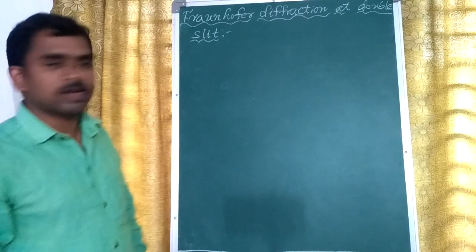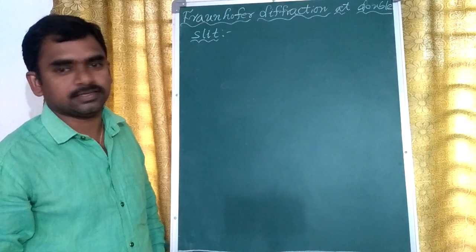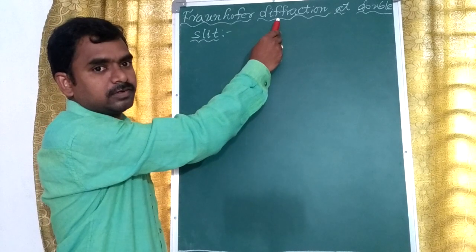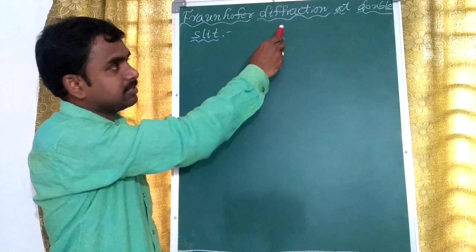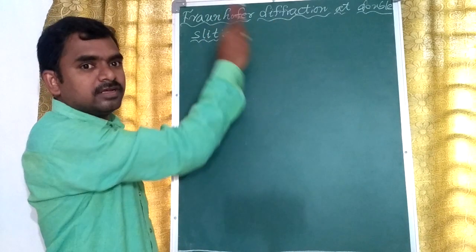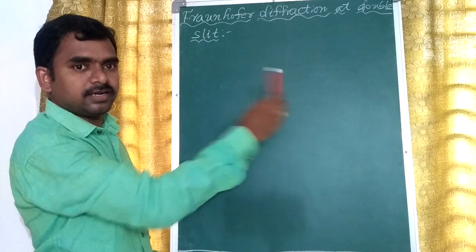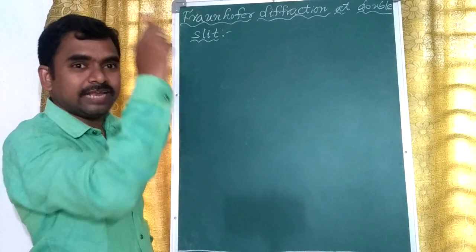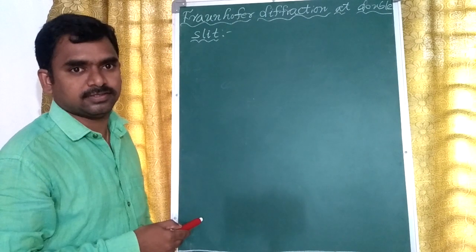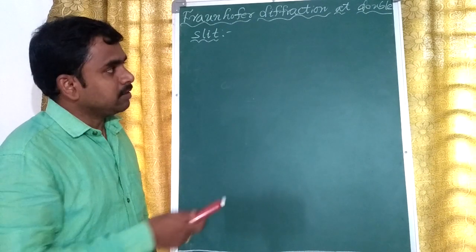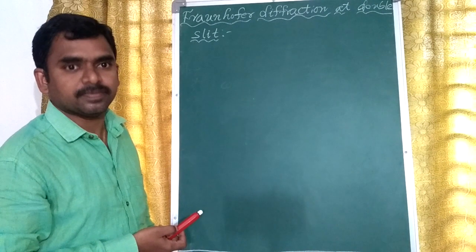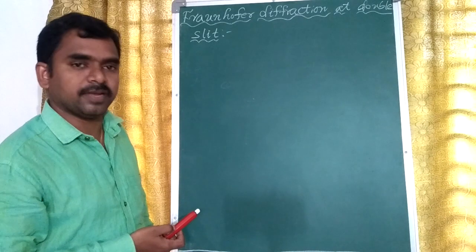Today's concept is Fraunhofer diffraction at double slit. The bending of light waves due to the corners at the edges is nothing but diffraction. Fraunhofer diffraction means the source and the screen are placed at infinite distances. Due to that, we have to use the lens. The wavefront is travelling very long distances, and that way it will be converted into the plane wavefront.